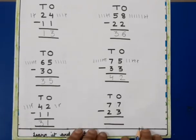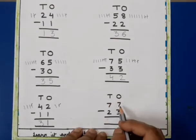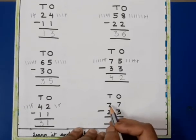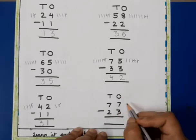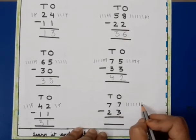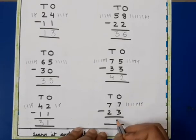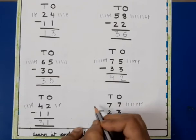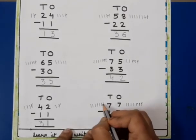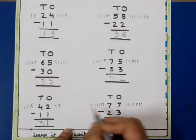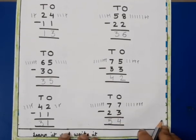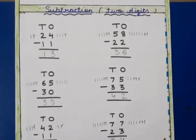Now again ones and tens. This is 77 and this is 23. We will subtract 23 from 77. This is ones and this is 7, we will draw 7 lines and cut 3, we will get 4. We will write 4 here. Now this is tens, this is again 7, we will draw 7 lines and cut 2, we will get 5. We will write 5 here. When we subtract 23 from 77 we will get 54.